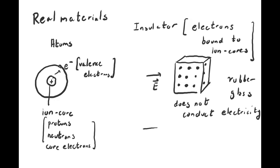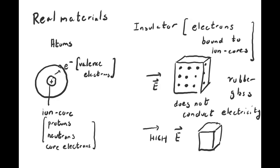You can imagine taking an insulator and applying an extremely strong electric field — strong enough to break electrons away from the ions, ionizing the material so that the insulator becomes conducting. But that's a very special case requiring an unusually high electric field or voltage.